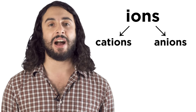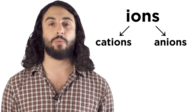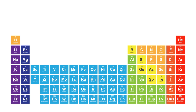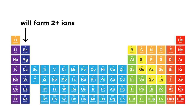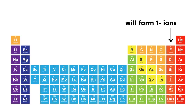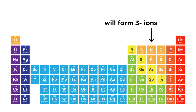We can know the most common ion an element will form by looking at where it is on the periodic table. If an atom is in group one, it needs to lose one electron to attain noble gas electron configuration, so one-plus is what they tend to form. Atoms from group two will tend to become two-plus ions. Elements in the group called halogens need to gain one electron to attain noble gas electron configuration, so they will tend to become one-minus ions. Others become two-minus, three-minus, and so forth.